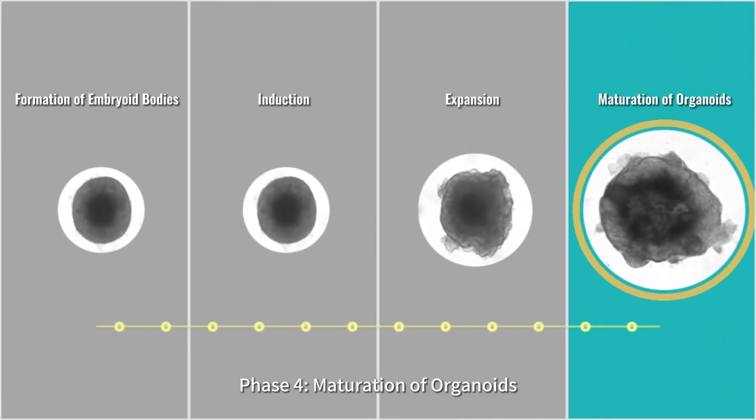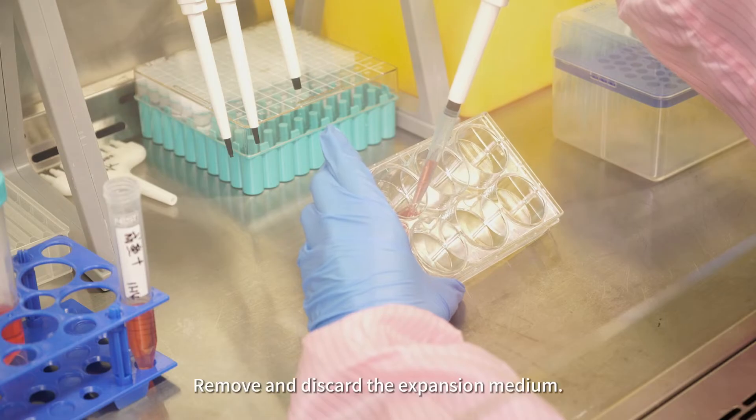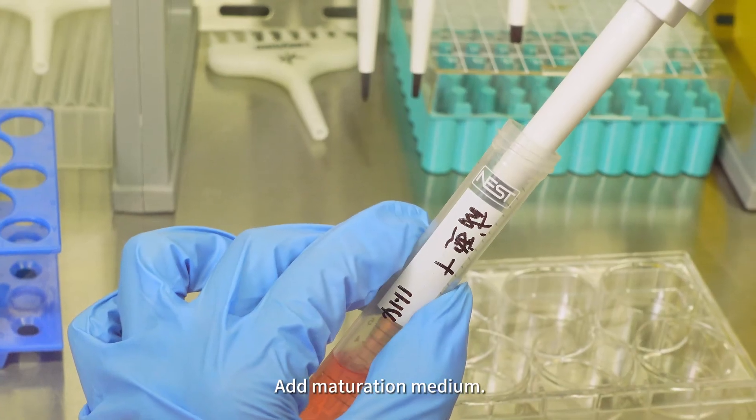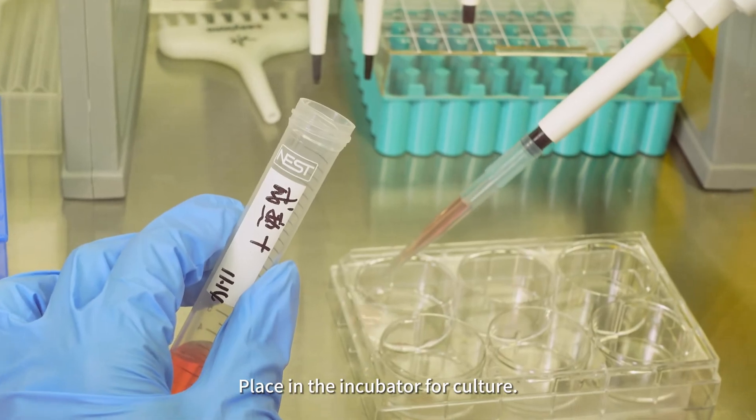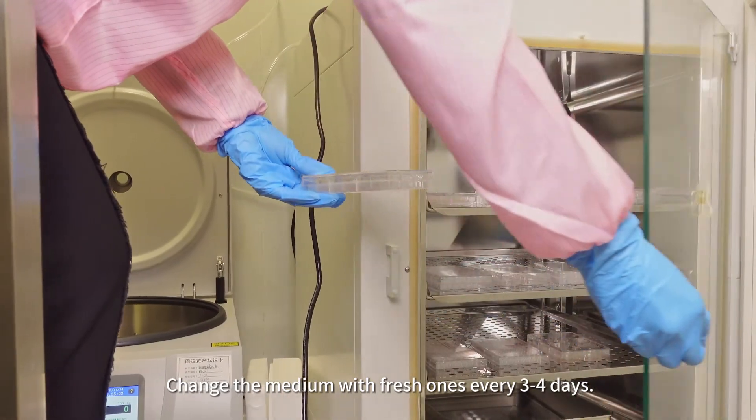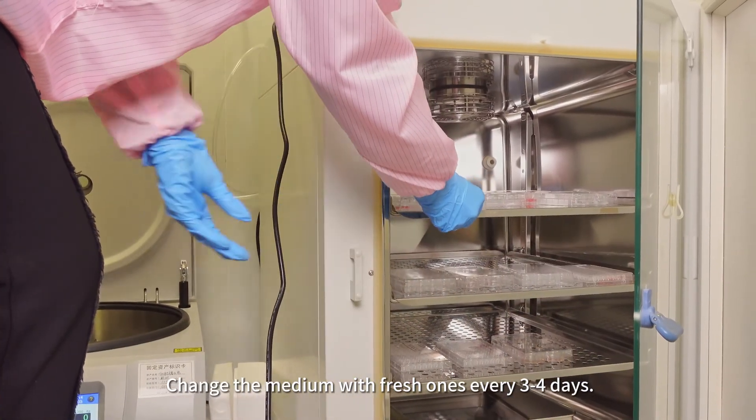Phase 4, Maturation of organoids. Remove and discard the expansion medium. Add maturation medium. Place in the incubator for culture. Change the medium with fresh ones every 3 to 4 days.